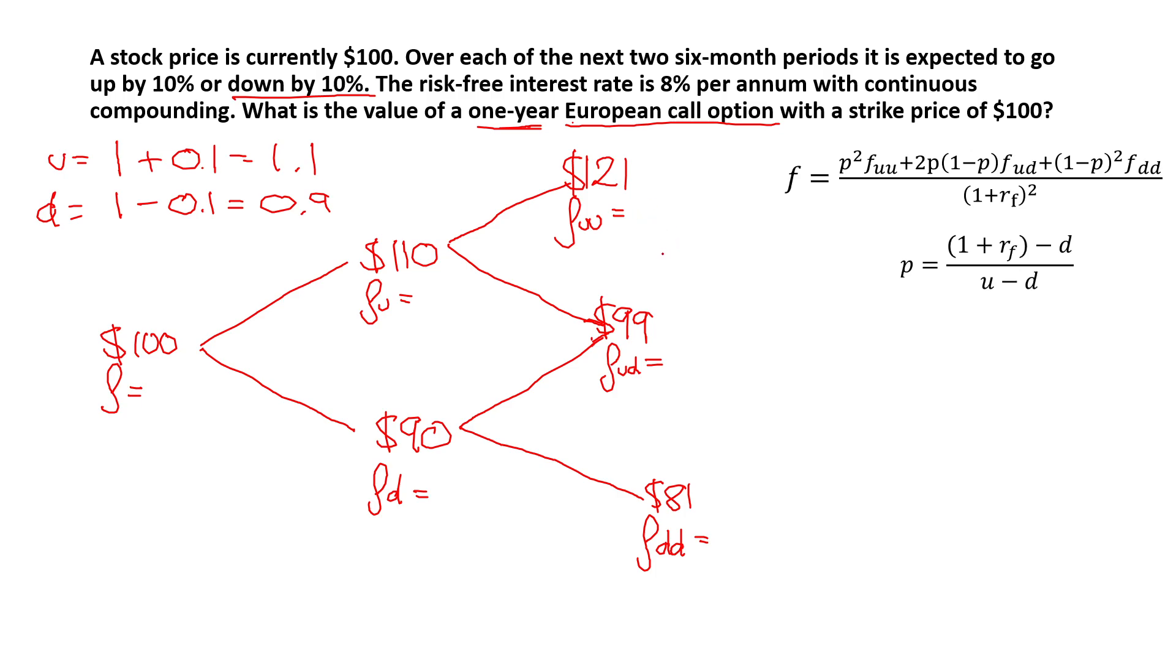Now, in order to find out the option values at the last period, we need to see if the investor is making any money on it. Remember, we said a call option, or an option, the definition of an option is that it gives you the right, not the obligation, to exercise the option. Therefore, the investor would only exercise such an option if he's making money on it. Because this is a call option, not a put option, the investor makes money when the share price goes up. If it were a put option, the investor makes money when it goes down. To see if the investor has made any money here, we need to do the share price, in this case it's 121, minus the strike price. As we can see, the investor here has made $21. Therefore, the call option value at this point is $21.